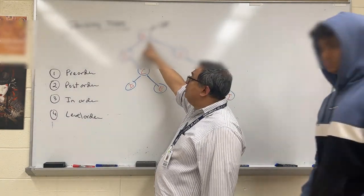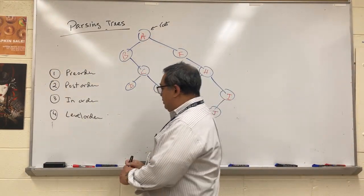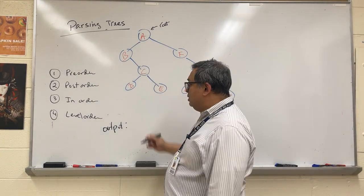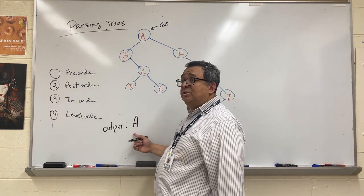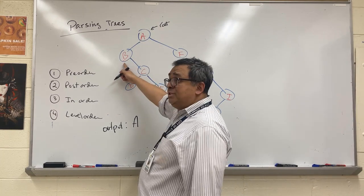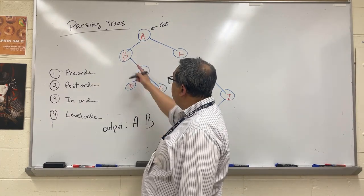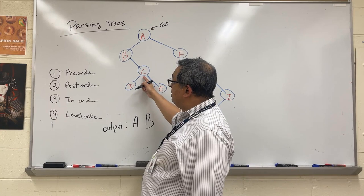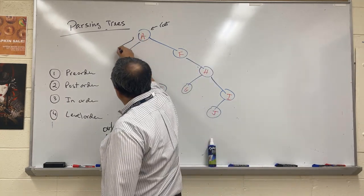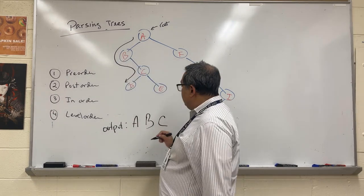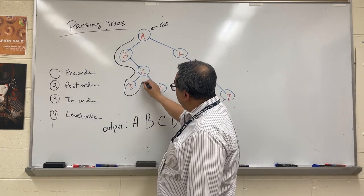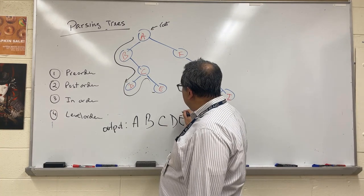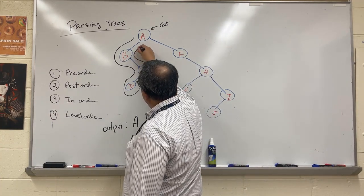Starting at the root, we always try to go to the left. We visit A and print it for the first time. We go left and print B. We try to go left from B but can't, so we go right and print C. Then we print D. Coming back up, we don't print C again since we've already visited it. Then we come down and print E. We've visited C, B, and A already.